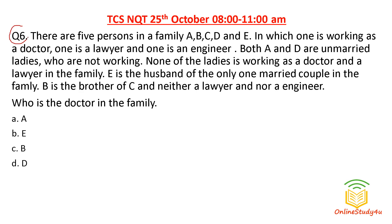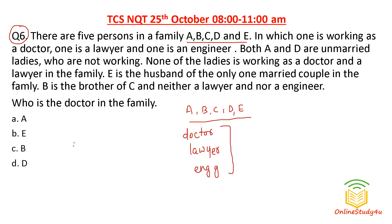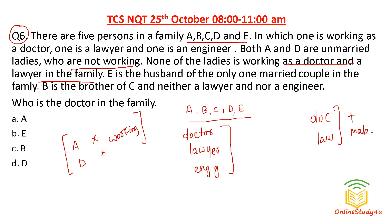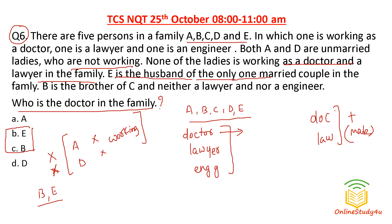Question six: there are five persons in a family — A, B, C, D, E — one is a doctor, one a lawyer, one an engineer. Both A and D are unmarried and not working. None of the ladies is working as a doctor or lawyer — so doctor and lawyer are male roles. Since A and D are not working, the doctor must be B or E — C is not mentioned in that context.